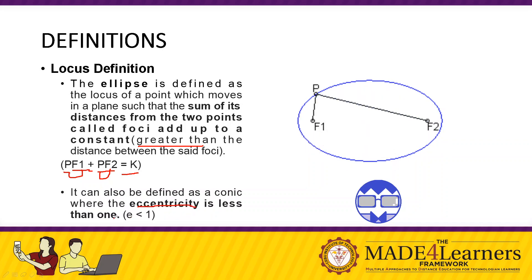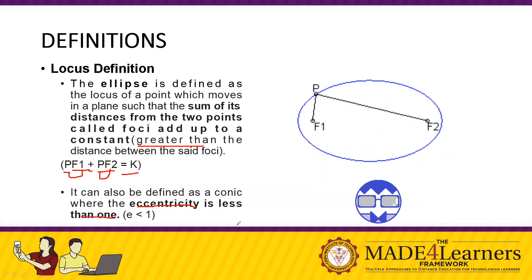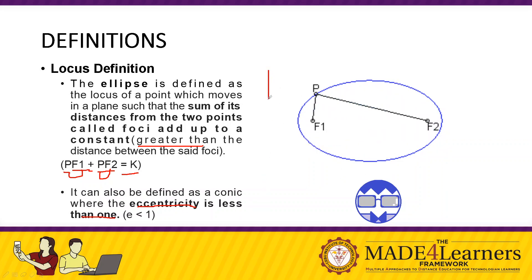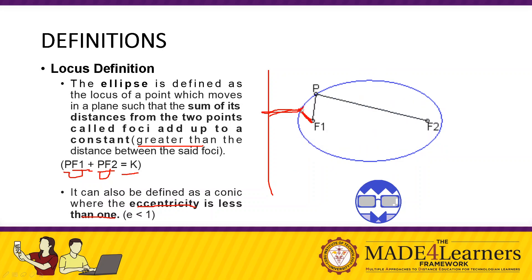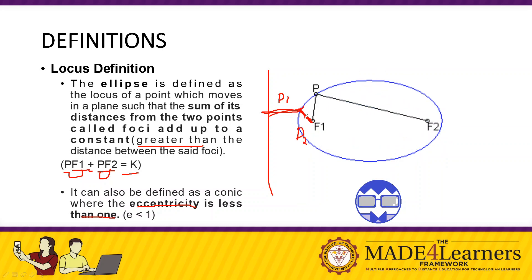An ellipse can also be defined as a conic where the eccentricity is less than one. The eccentricity is the ratio of the distance from a point on the ellipse to the nearest point on the directrix (d1), to the distance from that point to the focus (d2). The ratio d1 to d2 must be less than one.